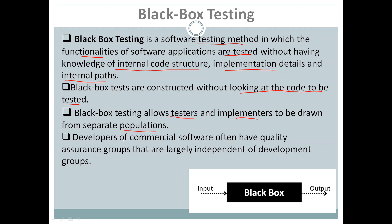Developers may develop the code and testers may test it separately. Developers of commercial software often have quality assurance groups that are largely independent of development groups. In commercial software development, they have a separate group of people to test the software, called the quality assurance group, which is largely independent of the development groups.